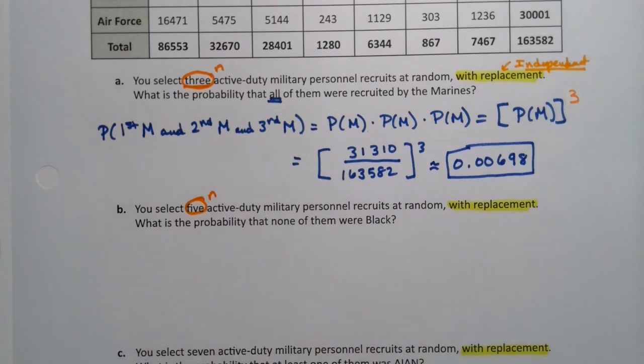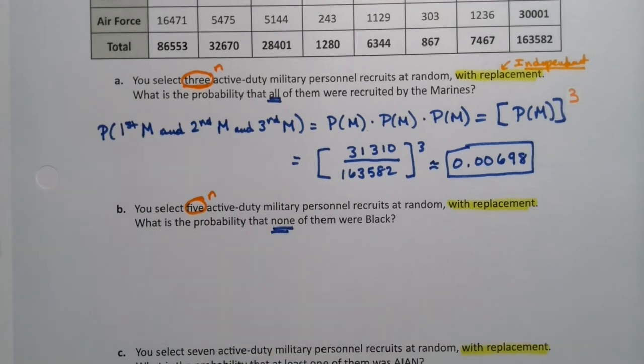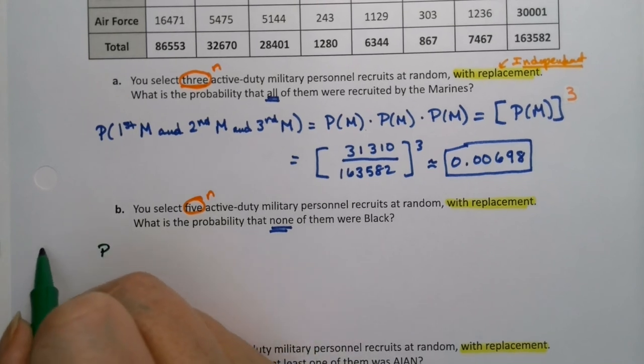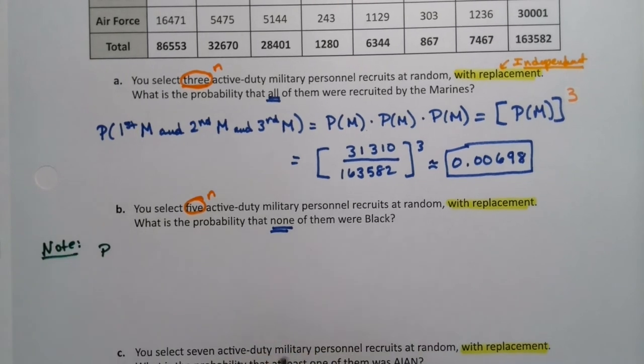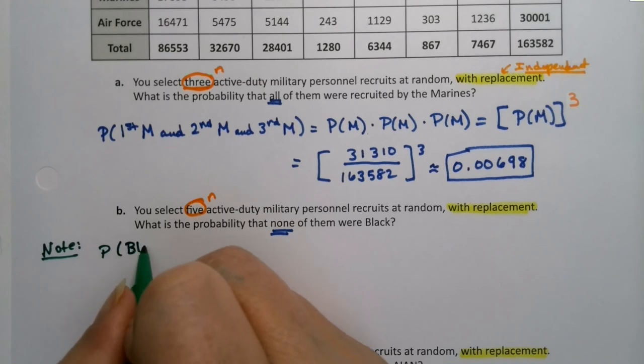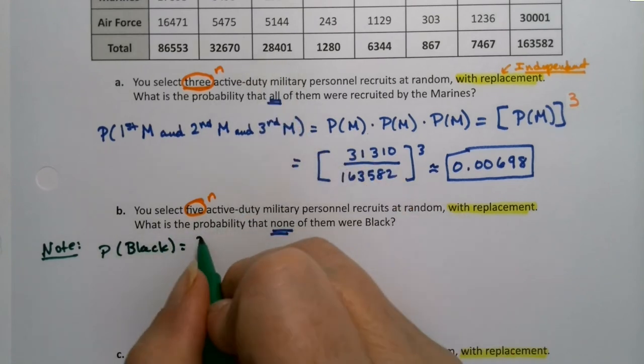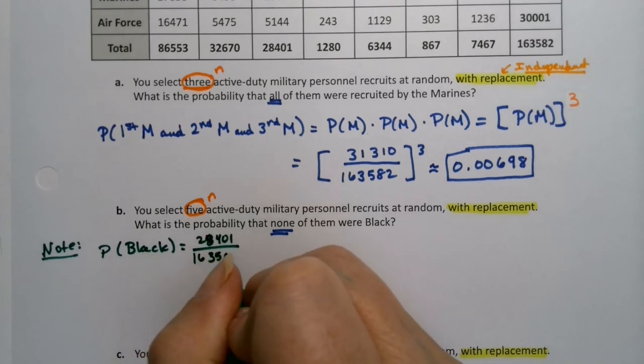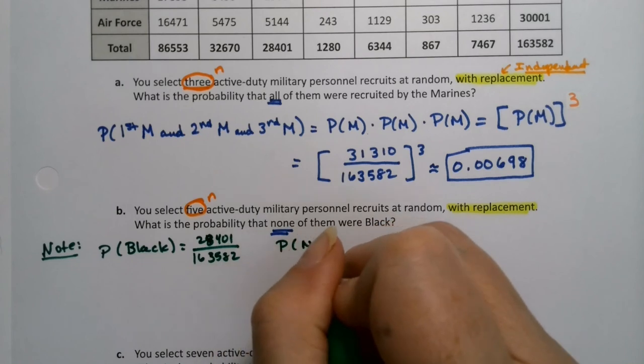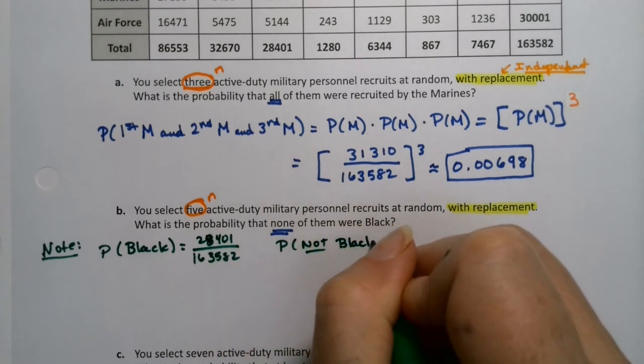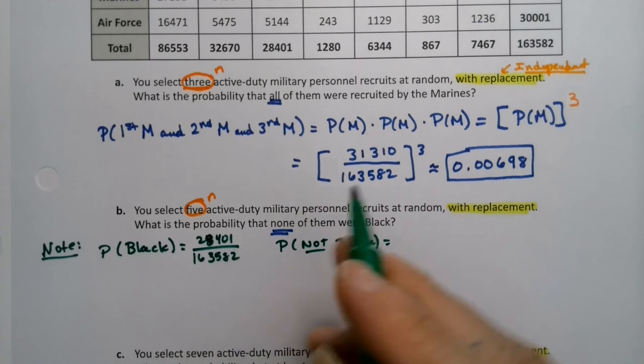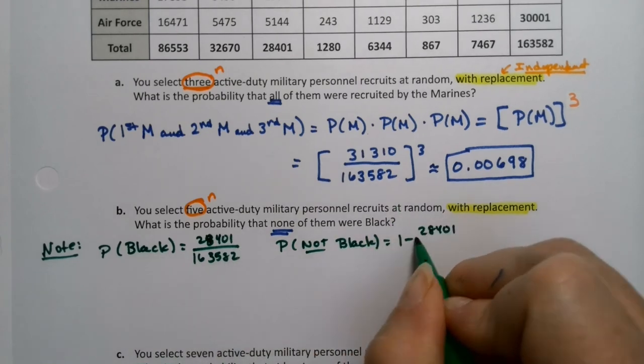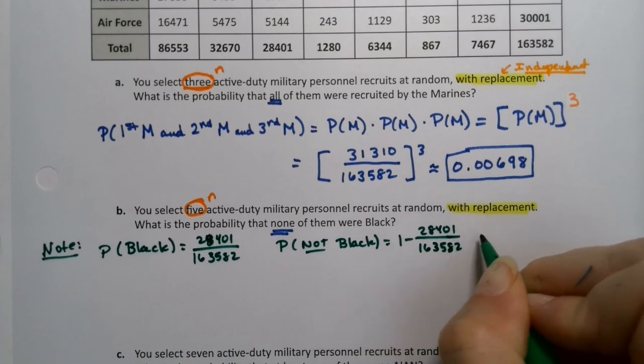These are the trickier ones for multiplication rule because it involves a negative voice. So let me just figure this out. Note, let's figure this out ahead of time. The probability of black was 28,401 divided by 163,582. So the probability that not black would be one minus that.